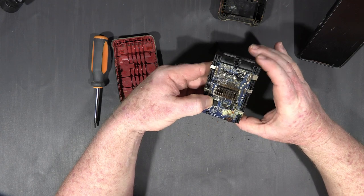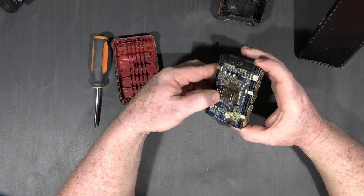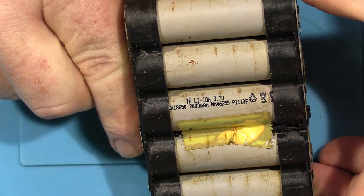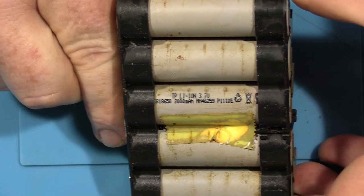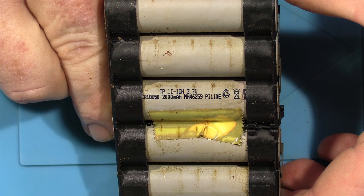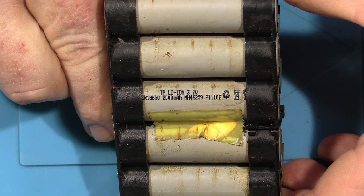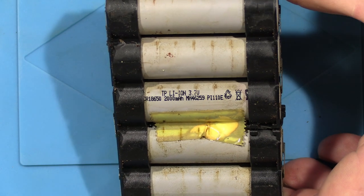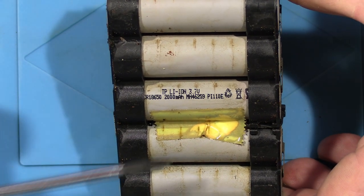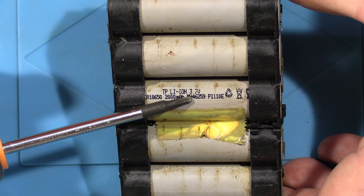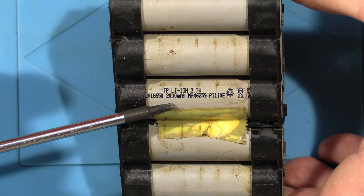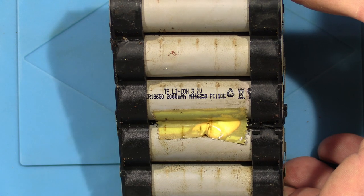I actually thought these things would probably be a little bit more weatherproof. So according to this, we're a TP lithium ion 3.7 volt CR 18650 2000 milliamps MH 46259 PI110E. So it doesn't even have the maker's name or anything on there. I might have to look that last couple of numbers up and see if I can find out who makes it.